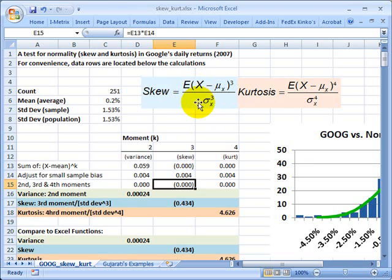and standardize it by dividing by the standard deviation cubed. And kurtosis is the fourth moment, similarly standardized by dividing by the standard deviation raised to the fourth power. So again, skew is third moment divided by cube of the standard deviation.